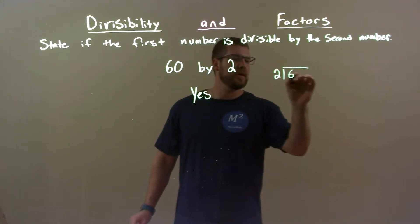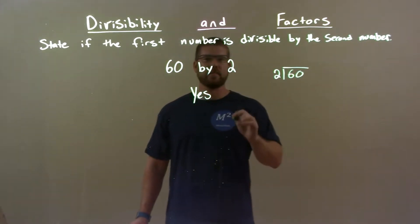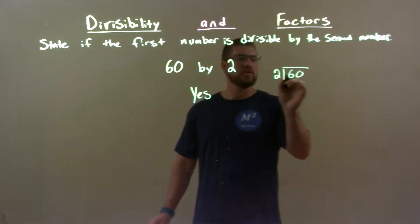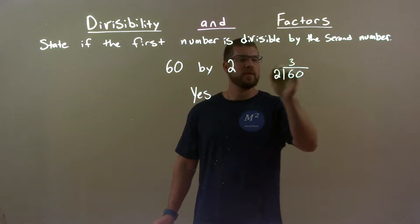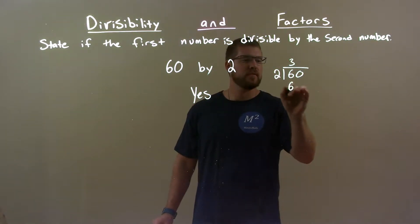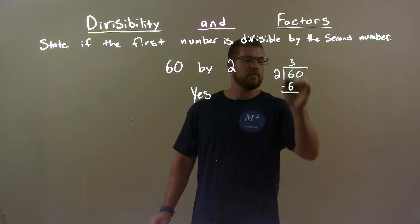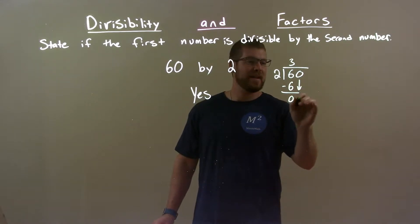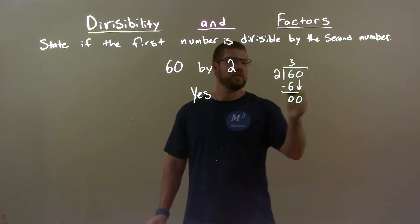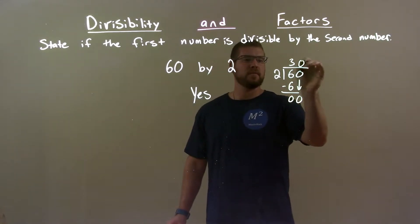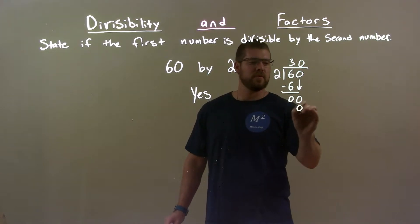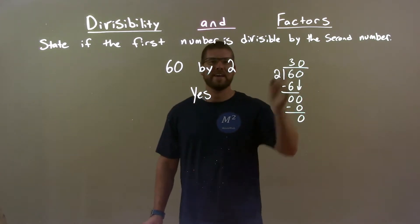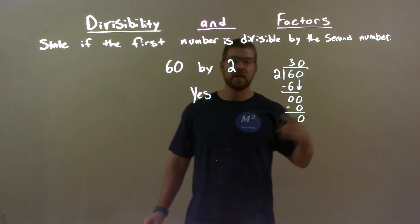2 goes into 60. Does it go in evenly? 2 goes into 6, 3 times. 3 times 2 is 6. Subtract — we have 0. Bring down this 0. 2 goes into 0, 0 times. 0 times 2 is 0. Subtract them. We end with 0.